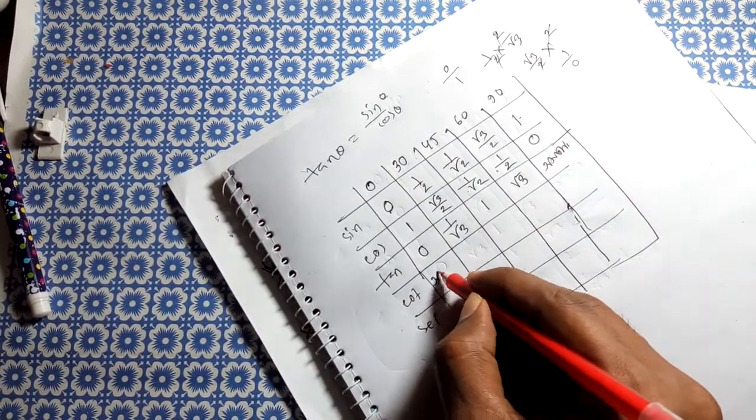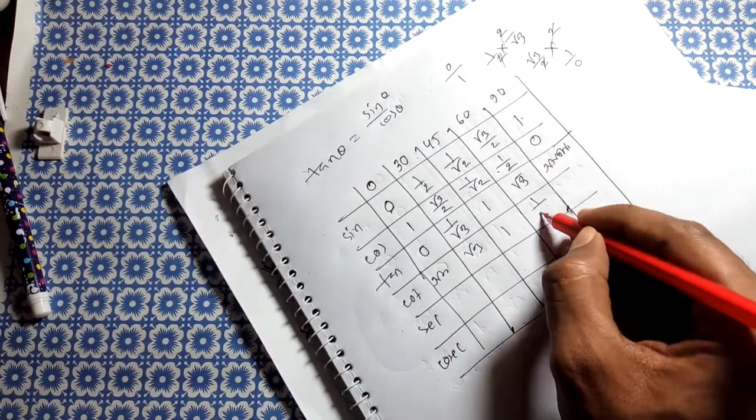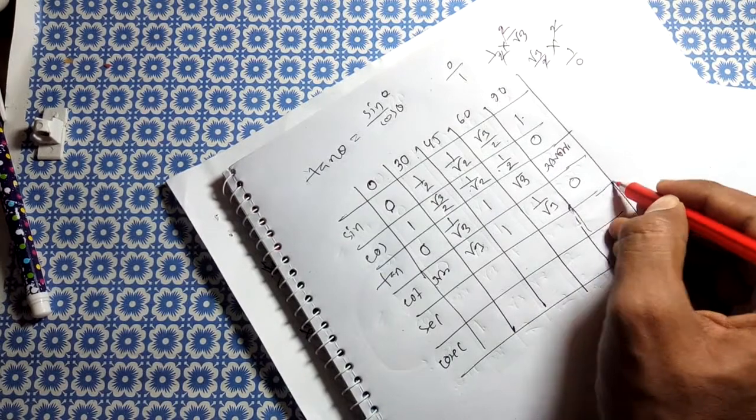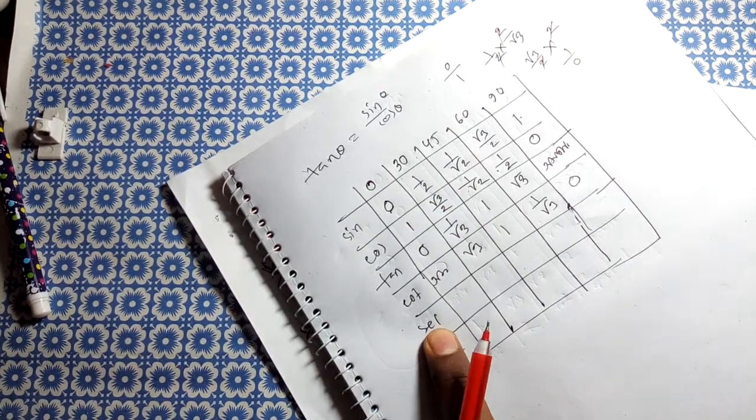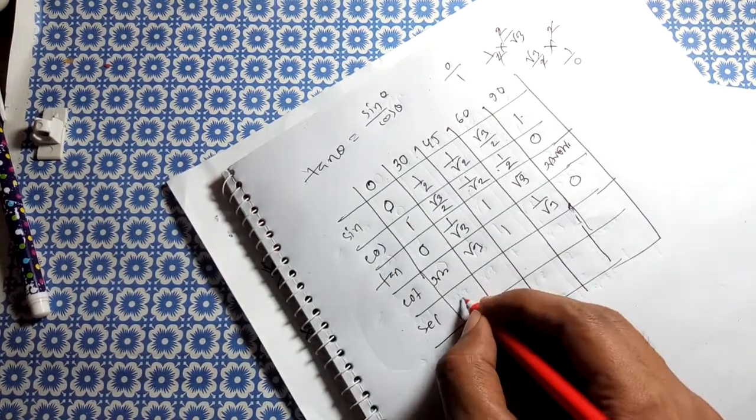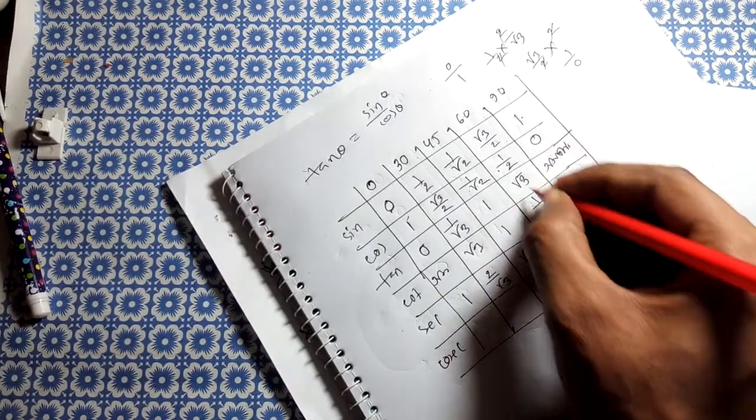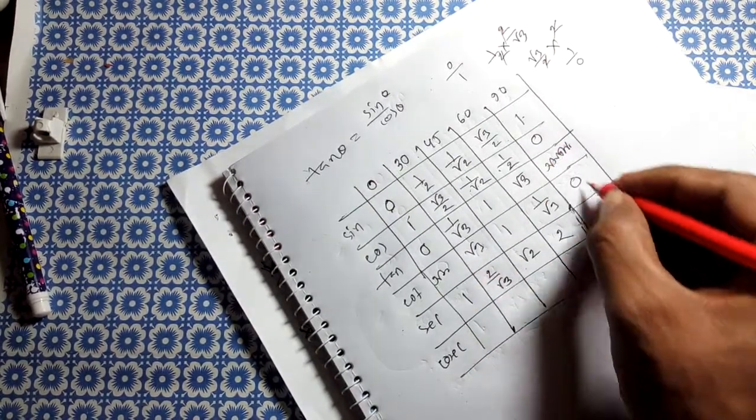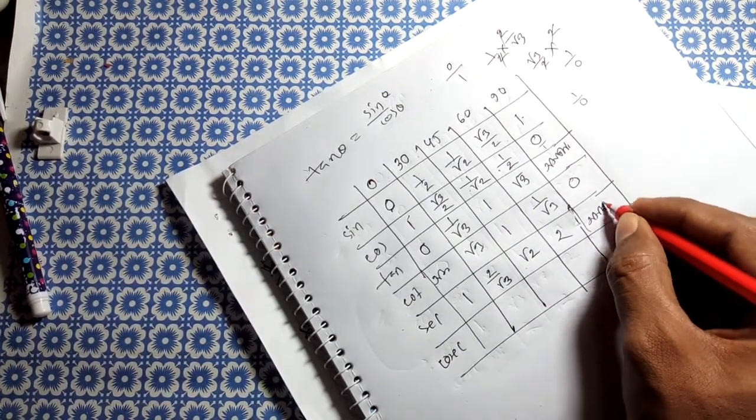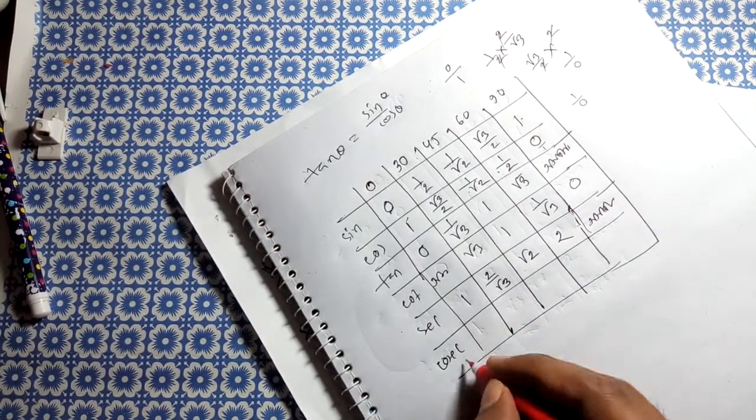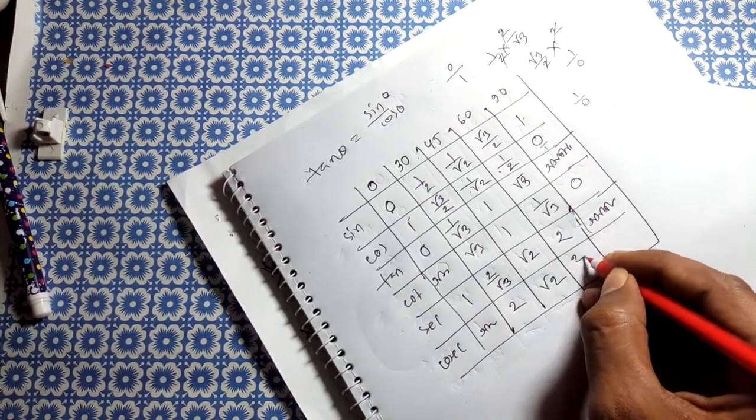For cot theta: the values are undefined at 0 degrees (1 by 0), then root 3, 1, 1 by root 3, and 0 at 90 degrees. For sec and cosec, remember they are reciprocals of cos and sin respectively.